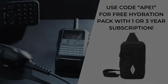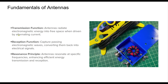At their core, antennas are designed to either emit or receive electromagnetic waves. When transmitting, an antenna is energized by an alternating current, causing it to radiate energy outward. During reception, the antenna intercepts electromagnetic waves, inducing a small alternating current that can be processed by the receiver. The concept of resonance is pivotal — an antenna tuned to a specific frequency will operate more efficiently, ensuring optimal performance in both transmitting and receiving signals.